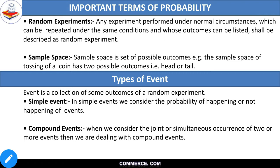Now we talk about the simple event — in simple event we consider the probability of happening or not happening of a single event. For example, what is the probability of head? It is 1 upon 2. What is the probability of tail? Also 1 upon 2. So that is a simple event. And compound event — when we consider the joint and simultaneous occurrence of 2 or more events.